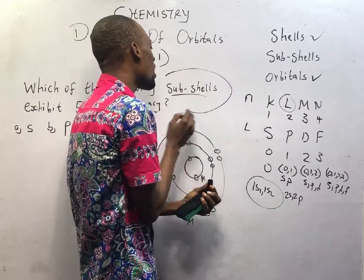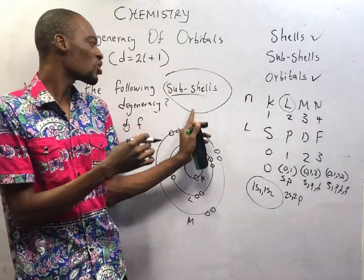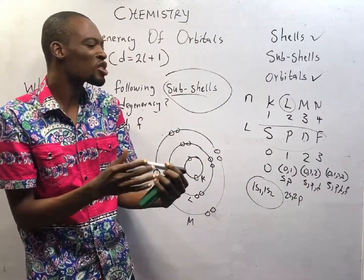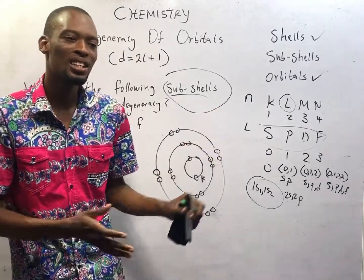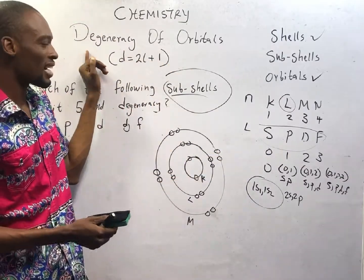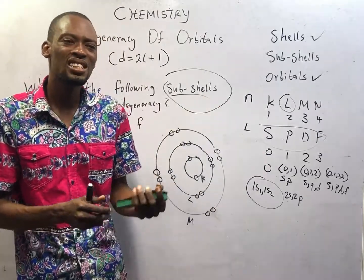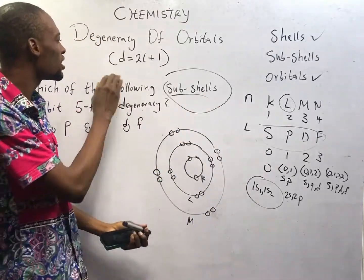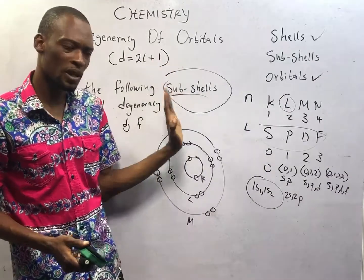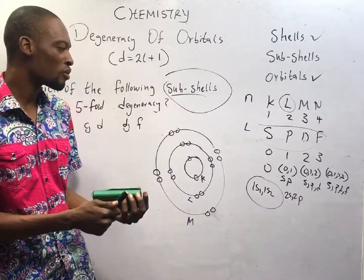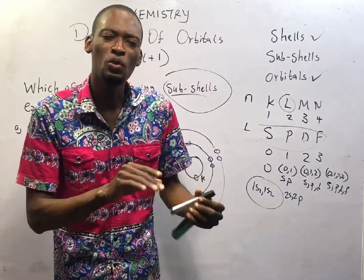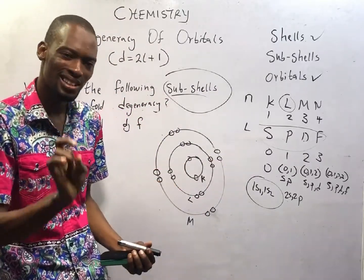When a subshell possesses more than one orbital, we simply say that it is a degeneracy of orbitals. So degenerate orbitals is simply a subshell which possesses more than one orbital. That is what degeneracy is. And to find the degeneracy of orbitals, it is simply D equals 2L plus 1. What you need to understand this video perfectly is my previous video where I explained the wave mechanics model and the quantum numbers in detail.